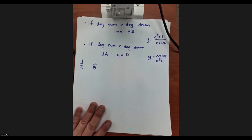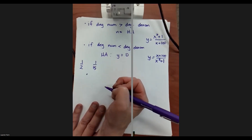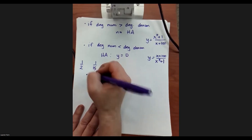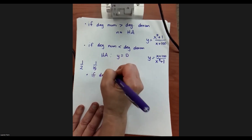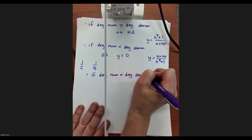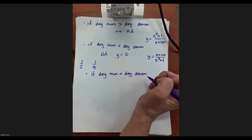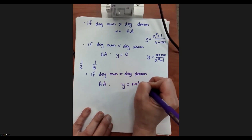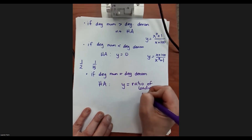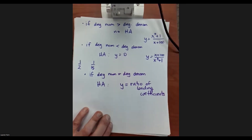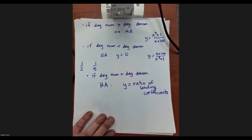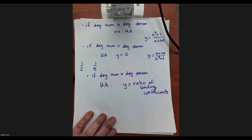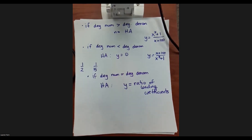Case 3: if the degree of the numerator equals the degree of the denominator, you do have a horizontal asymptote, and it's y equals the ratio of the leading coefficients — the numbers in front of your x-value to the highest degree. That's because when the degrees are the same, the numerator and denominator grow at the same rate, so it approaches that fraction.